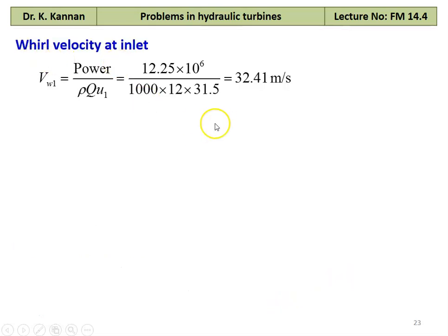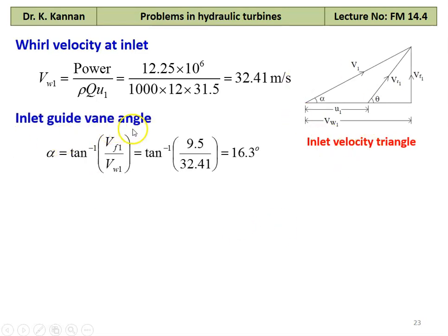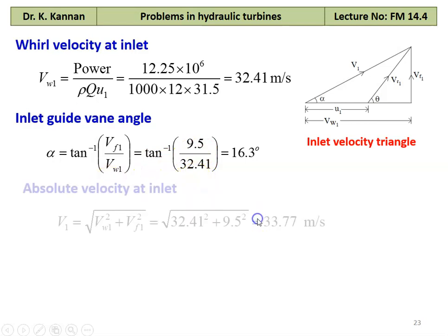The whirl velocity at the inlet: from the power, we calculate the whirl velocity. Vw1 equal to power produced by the turbine divided by rho Q into U1, which is 12.25 into 10 power 6 divided by 1000 into 12 into 31.5 equal to 32.41 meters per second. Now, referring to the inlet velocity triangle, the inlet guide vane angle alpha equal to tan inverse of Vf1 divided by Vw1, which is tan inverse of 9.5 divided by 32.41 equal to 16.3 degrees.